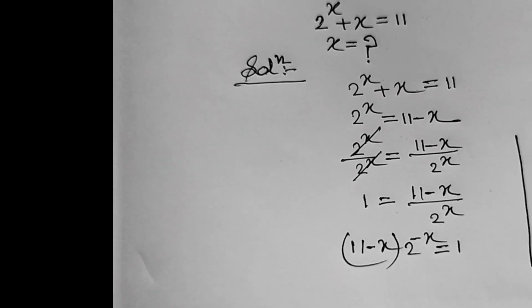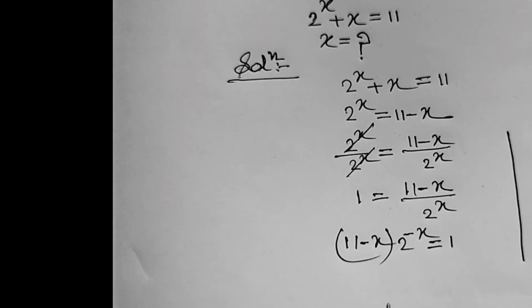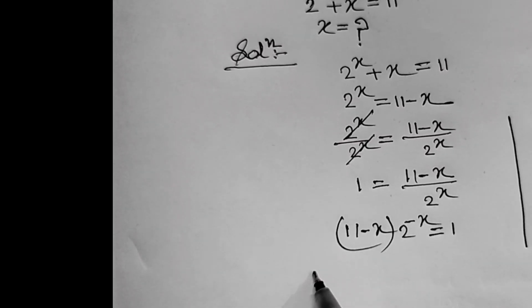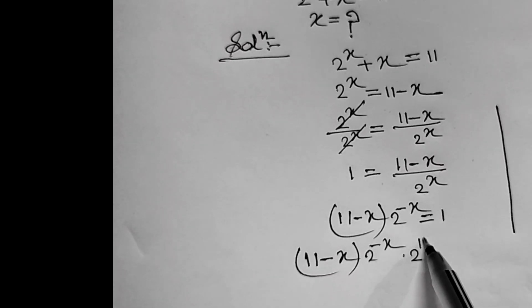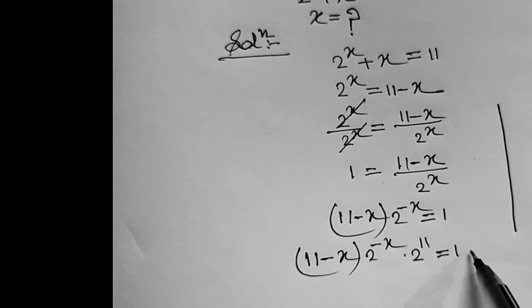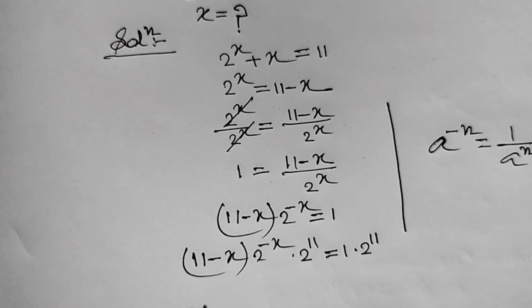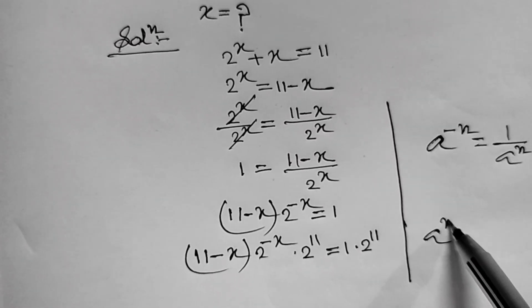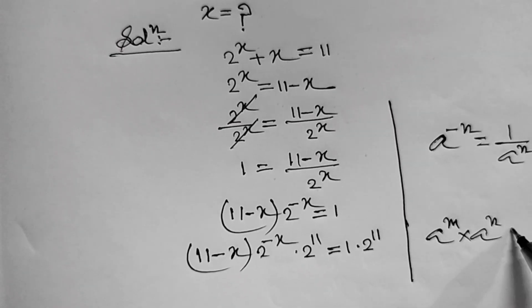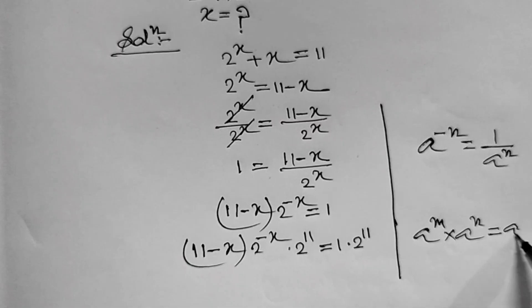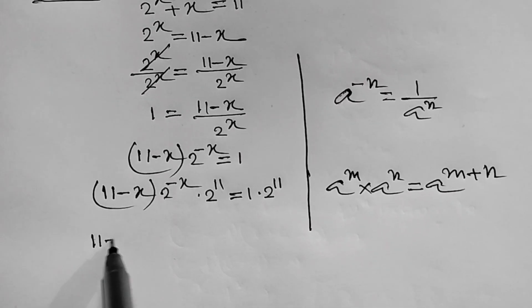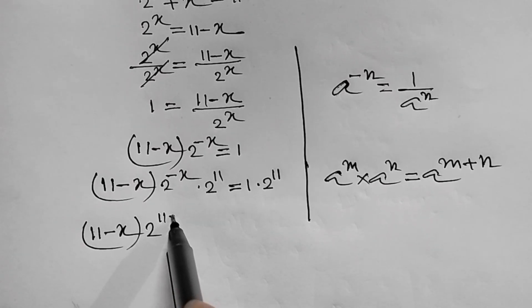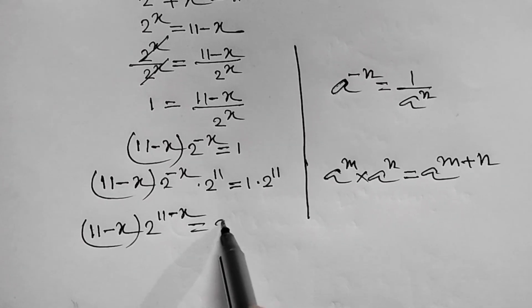Now, we will have to multiply both sides by 2 to the power 11. Therefore, multiplying both sides by 2 to the power 11, we get 11 minus x times 2 to the power minus x times 2 to the power 11 equal to 1 times 2 to the power 11. Then, the above equation can be written as 11 minus x times 2 to the power 11 minus x equal to 2 to the power 11.